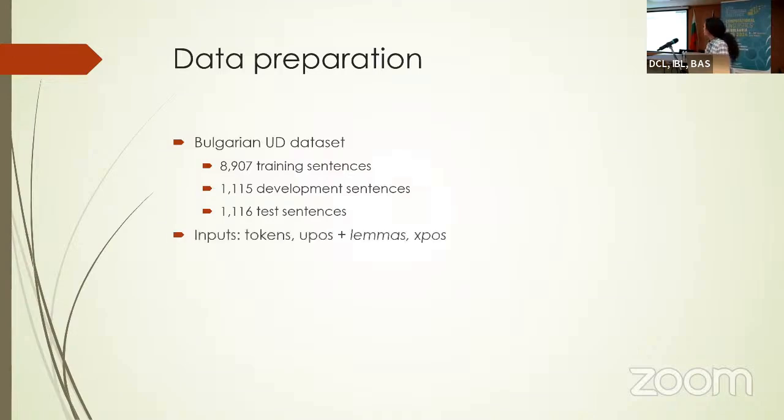For inputs, in the algorithm by Dozat and Manning, they are using as inputs only the tokens and the universal part of speech tags. But in my model, I decided to add two additional inputs. These are the lemmas and the morphological language-specific characteristics of the words. We will see on the next slide what is the difference as a result, but it gave some boost to the model.